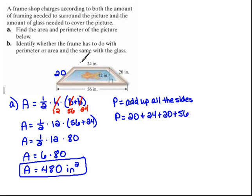We'll know the perimeter will equal 20 plus 24 plus 20 plus 56. And that means our perimeter is 120 inches. Perimeter is a linear measure, so it's always in singular units.